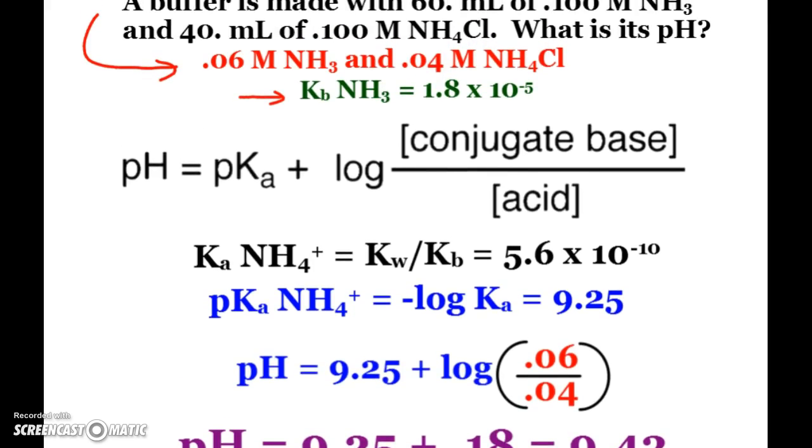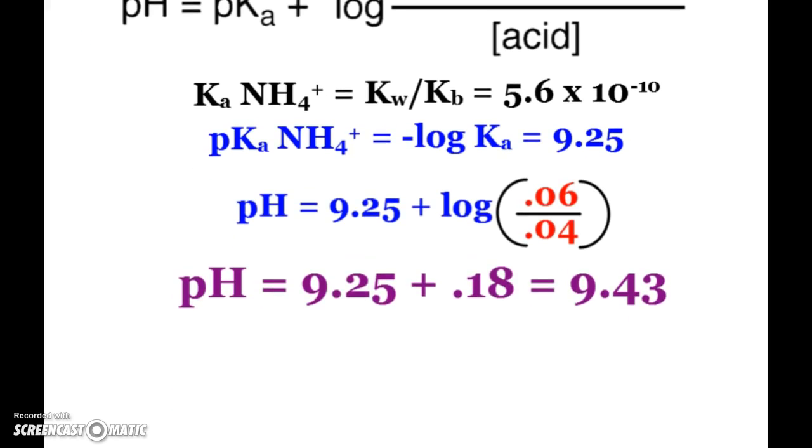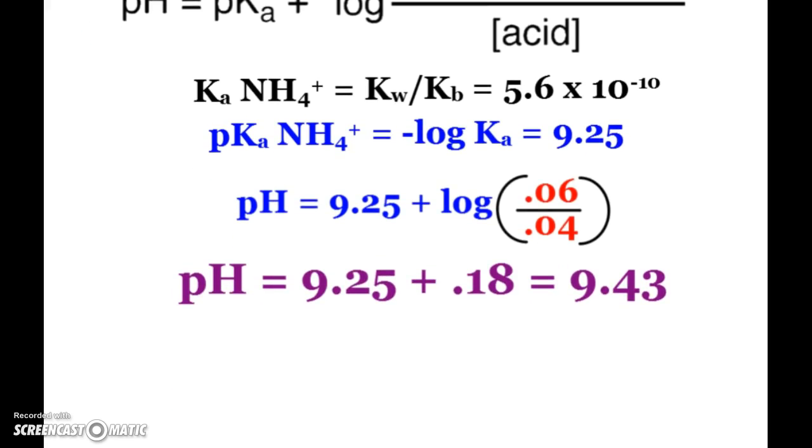0.06 is the concentration of my conjugate base, and 0.04 is the concentration of the acid. Ammonium, NH4+, is going to donate a hydrogen, which makes it the acid. Ammonia, NH3, can accept that hydrogen, which makes it the base. And you'll see there through magic that we end up with the exact same answer that we saw a couple slides earlier of 9.43.